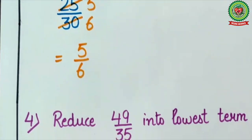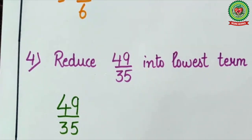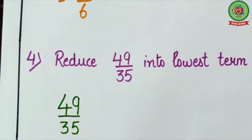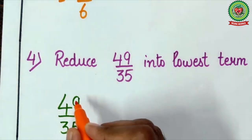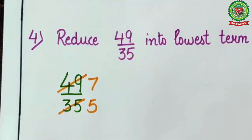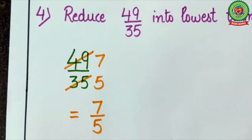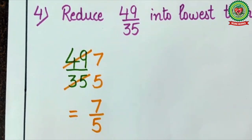Now see one more question: reduce 49 upon 35. On which common table do these two numbers come? 49 and 35 both come in the table of 7. So 7 times 7 is 49, and 7 times 5 is 35. The common factor between 7 and 5 is 1. Therefore 7 upon 5 is the lowest term of 49 upon 35.